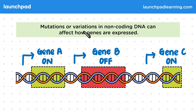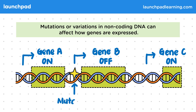Mutations or variations in non-coding DNA can affect how genes are expressed. For example, if we had a mutation around here on the sequence, this would change gene B from being off to being on. Therefore, gene B is now switched on when it shouldn't be.